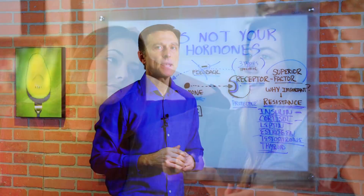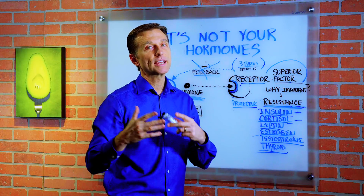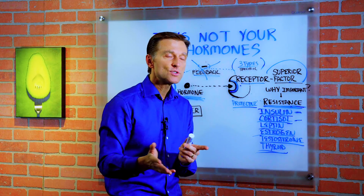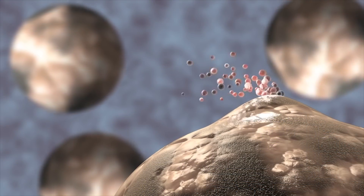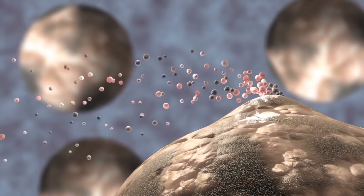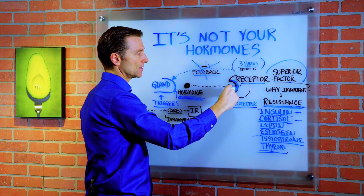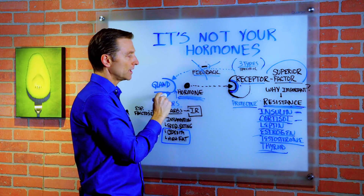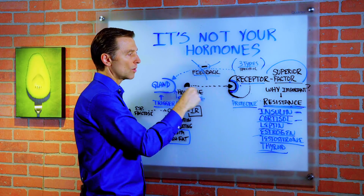You've seen this in human relationships — where someone just keeps talking and talking. The more you ignore that person, the more they're going to keep talking. You might as well just listen to them and acknowledge them so they'll stop. The same thing happens in the body: if you block that listening mechanism — the receptor — the gland will keep pumping out more and more hormone.